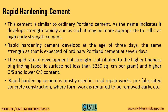Rapid Hardening Cement is similar to ordinary Portland cement. As the name indicates, it develops strength rapidly, and it may be more appropriate to call it high early strength cement. Rapid hardening cement develops at the age of 3 days the same strength as that expected of ordinary Portland cement at 7 days. The rapid rate of strength development is attributed to the higher fineness of grinding — specific surface not less than 3250 cm²/g — and higher C3S and lower C2S content. It is mostly used in road repair works, prefabricated concrete construction, and where formwork is required to be removed early.